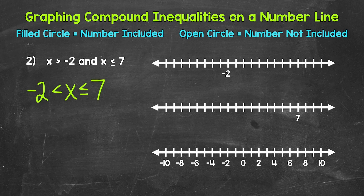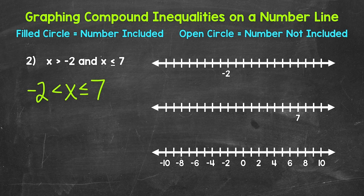We can read this starting with the variable: x is greater than negative two and less than or equal to seven. Whenever you see a compound inequality written like this, it's a compound inequality involving and — something to keep in mind. Now let's graph this on a number line. We're going to break this down into two graphs first, then combine everything into one.